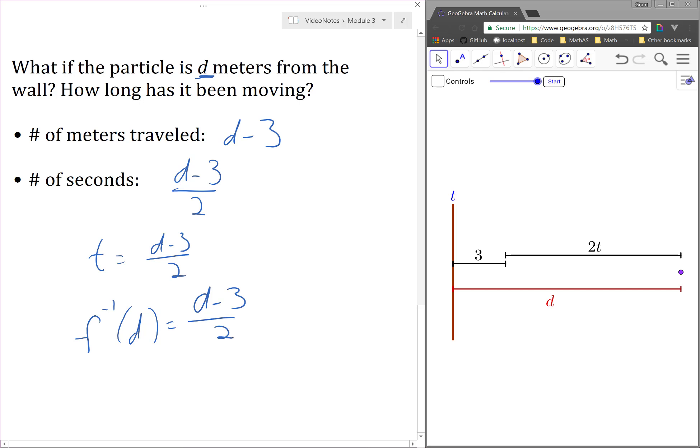Thinking about the same relationship, but with the input and output variables reversed, generally results in thinking about reversing or undoing the original function process. This is the perspective we will be taking in this investigation. A function inverse reverses the process of the original function.